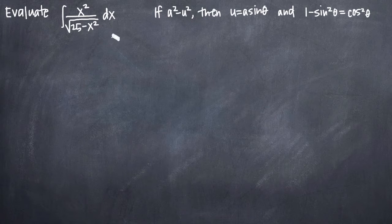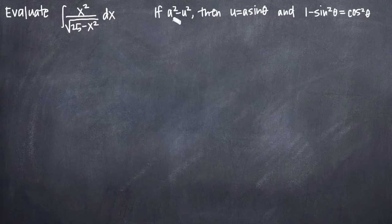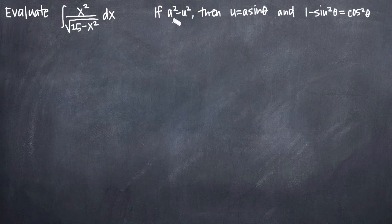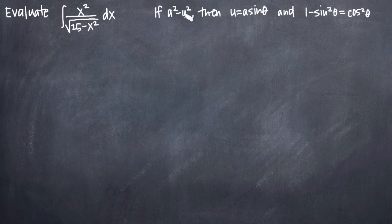With trigonometric substitution problems, you're always looking for something inside your integral, either in the form a squared minus u squared, a squared plus u squared, or u squared minus a squared. In this form, you're looking for a as a constant and u as a term that involves the variable.